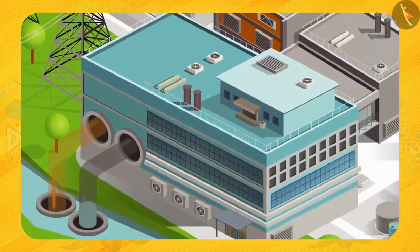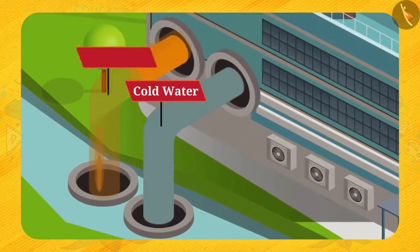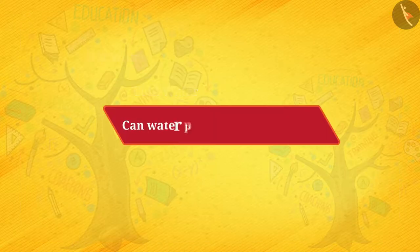For example, factories like thermal power plants take cold water from the reservoir and pour hot water into the same reservoir. This increases the water temperature, which greatly affects the life of aquatic plants and animals.